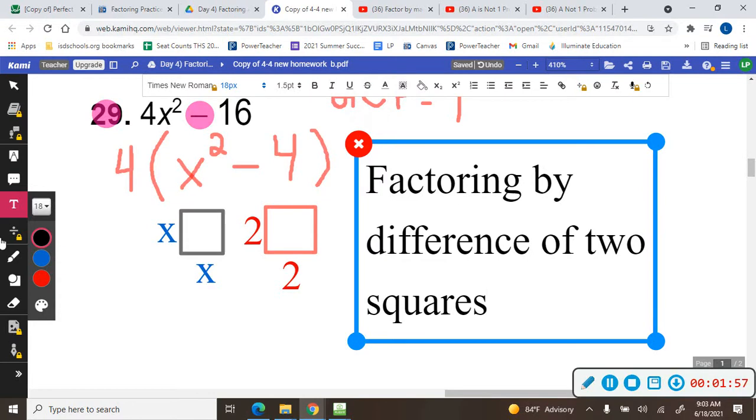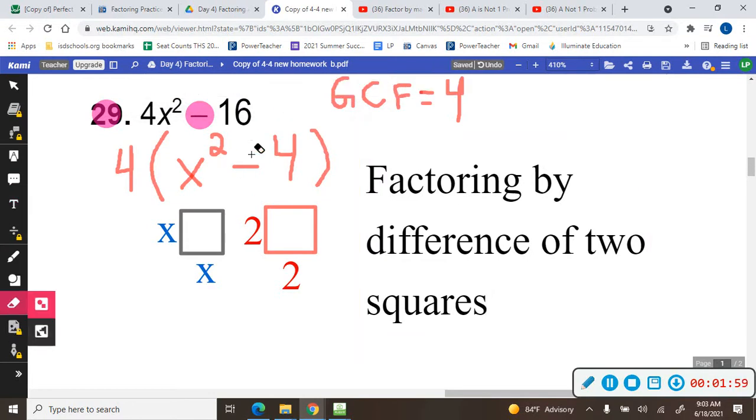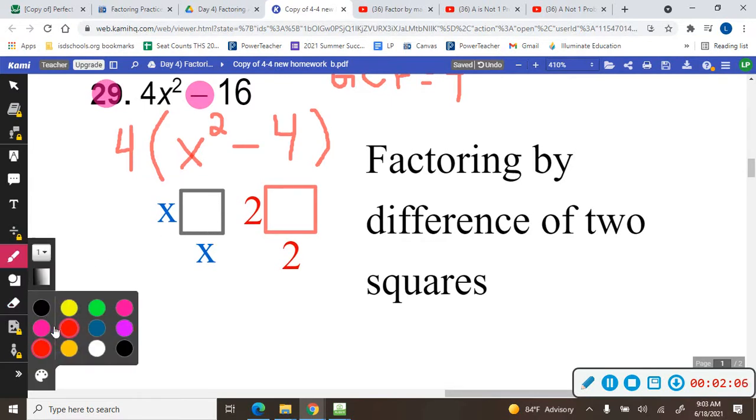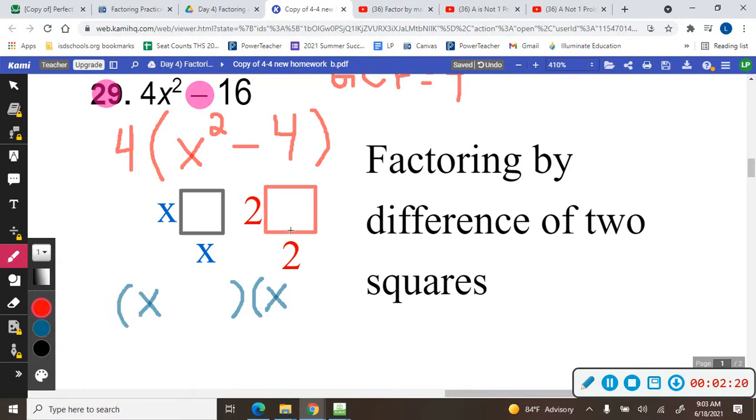And you can only use it if there is a minus and both of those are squares. And all you do is you put the x with the 2, so you make this x and x, break it up into the square, and then you make this 2 and 2.